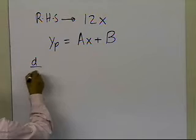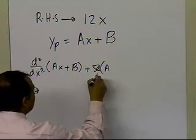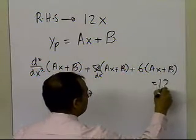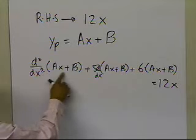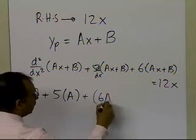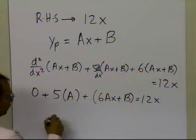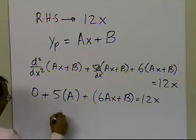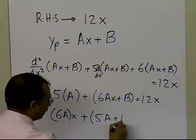What I have to do is substitute ax plus b back into the differential equation. The second derivative of ax plus b is 0, the first derivative is just a, and I'll get 6ax plus b equal to 12x. Collecting terms: the coefficient of x gives 6a, and the constant term gives 5a plus b, set equal to 12x.